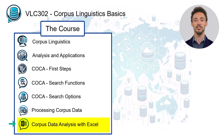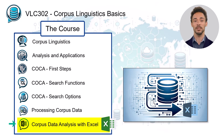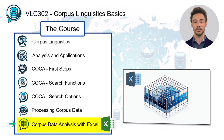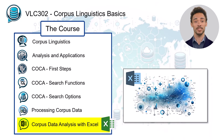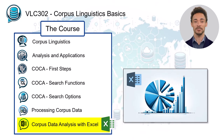The final unit of this introductory course shows how to export corpus data from the corpus interface to Microsoft Excel, the most widely used spreadsheet software. You will learn how to create and work with tables in Excel, how to calculate relative frequencies, and how to create charts to visualize your findings.